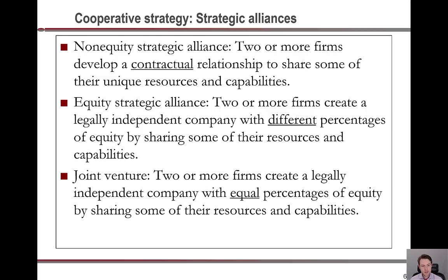There are equity strategic alliances and joint ventures, which are similar in that two or more firms create a legally independent company. The main difference is that a joint venture has equal percentages between each of the parent firms, whereas in an equity strategic alliance there is a different percentage — generally because one partner has a significant advantage, whether in size or in competitive technology.